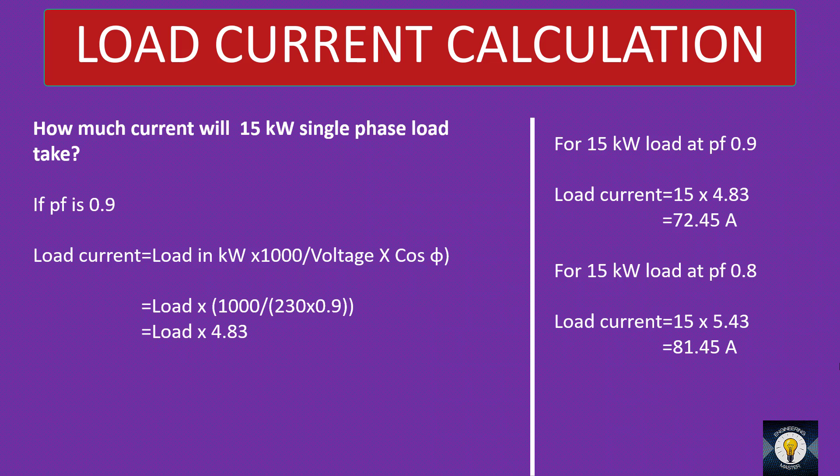One thing is evident: if the power factor is lower, the load draws more current from the line. You can see that at 0.8 power factor the current is 81.45 A — it is taking more current from the system. If your line voltage is 415 V and phase voltage is 230 V, just remember these multipliers and multiply your load to get the current. If your voltage is different, the equation remains the same — use it to form your own multiplier, which will help you find the current quickly.